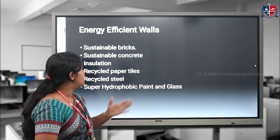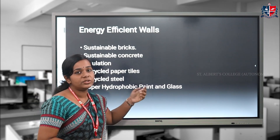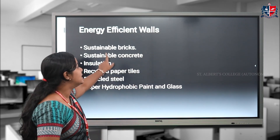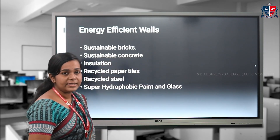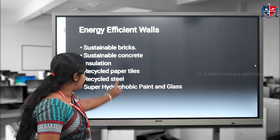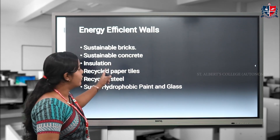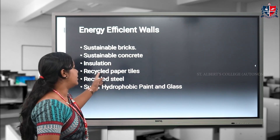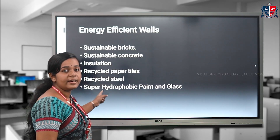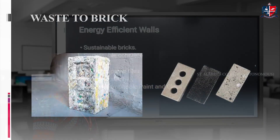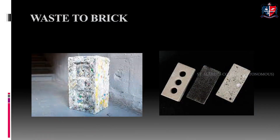Some of the energy efficient materials used in the construction of walls are sustainable bricks, sustainable concrete, insulation, recycled paper tiles, recycled steel, and superphobic frames and glass.